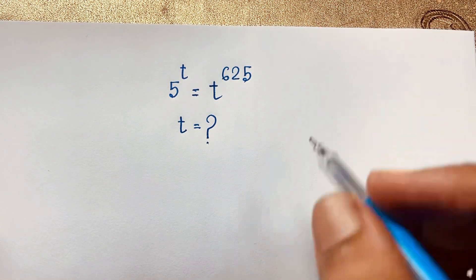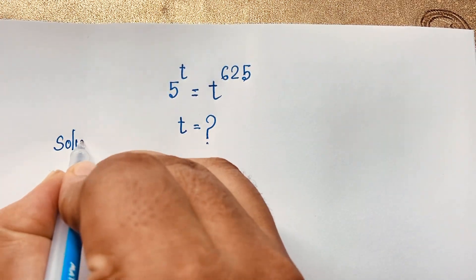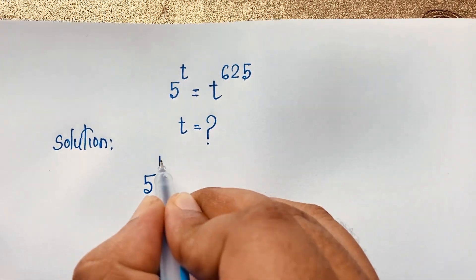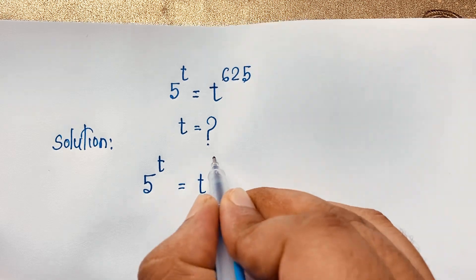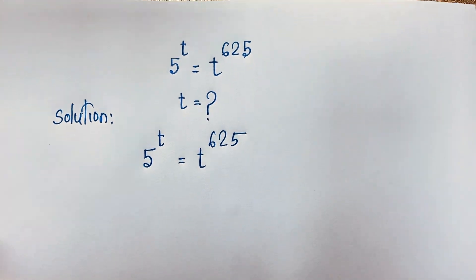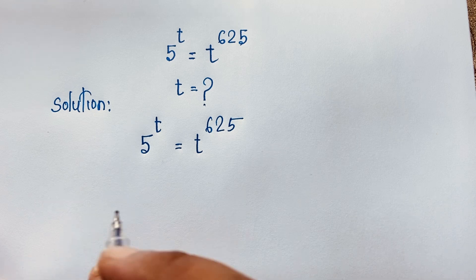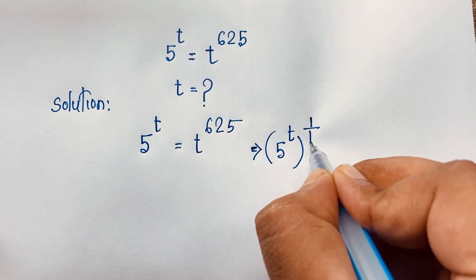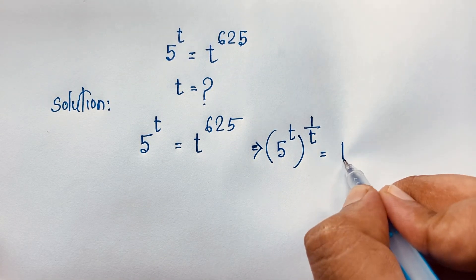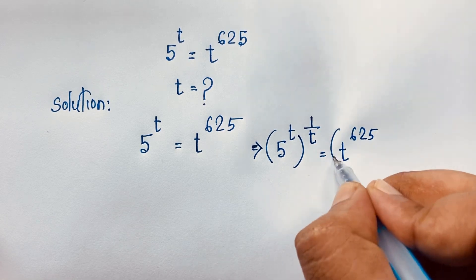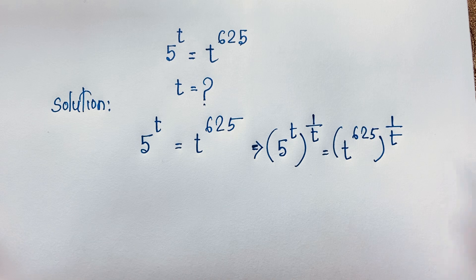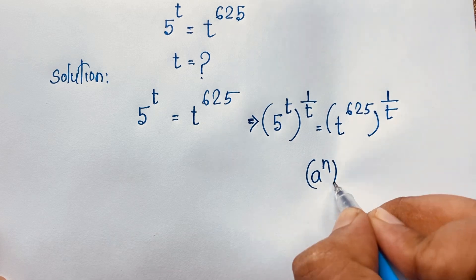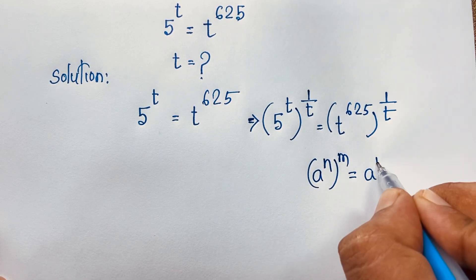How to solve this interesting math question? Our question is 5 to the power t is equal to t to the power 625. I use both-side exponent 1 over t, so it becomes 5 to the power t, bracket to the power 1 over t, is equal to t to the power 625, bracket to the power 1 over t. I apply the math formula: a to the power n, bracket to the power m, equals a to the power n times m.